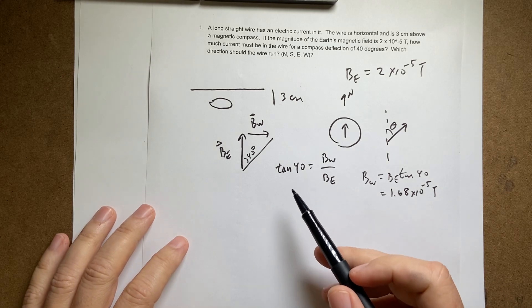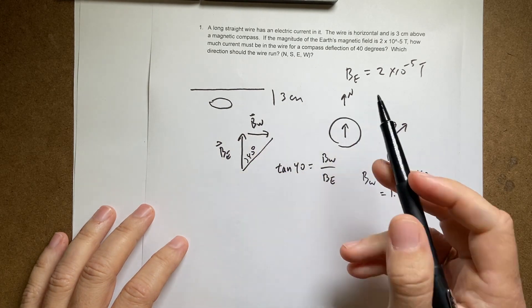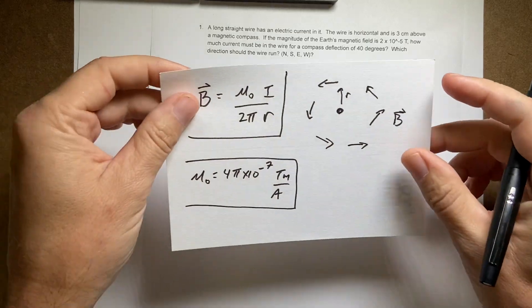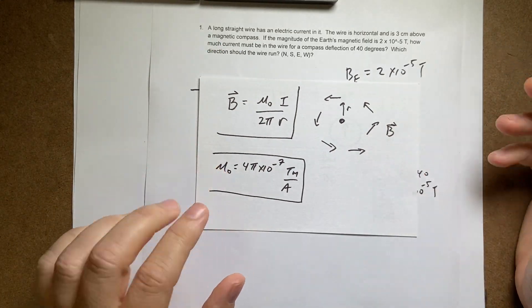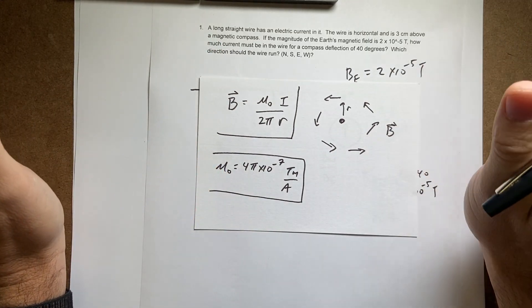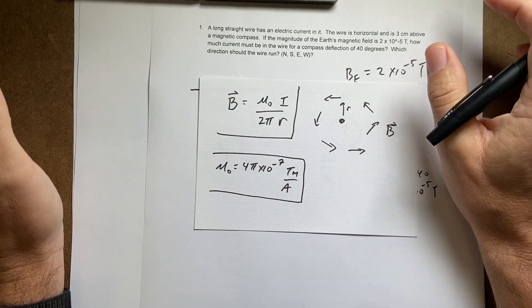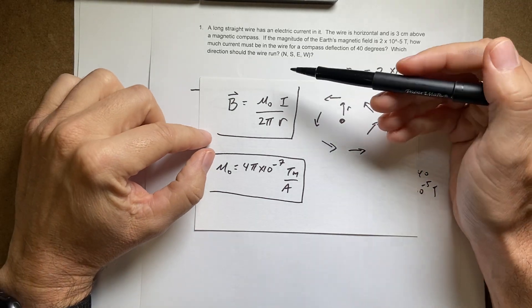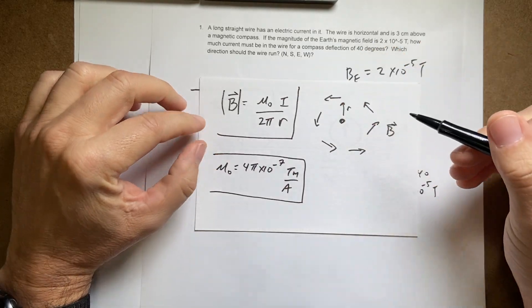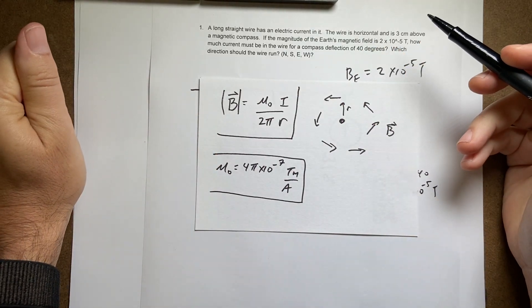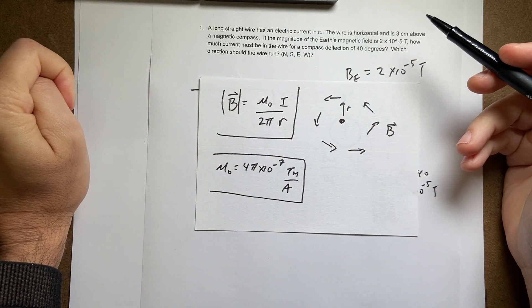So now how do I find the current in the wire? So here actually I wrote this down beforehand. Okay. This is the, you have to be very careful. This is the algebra based for this course. That should be like that. You can't derive the magnetic field due to a wire.